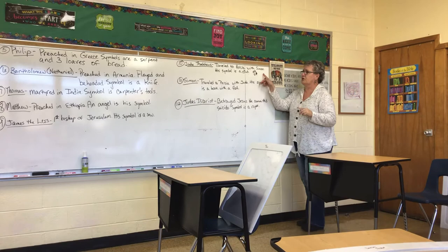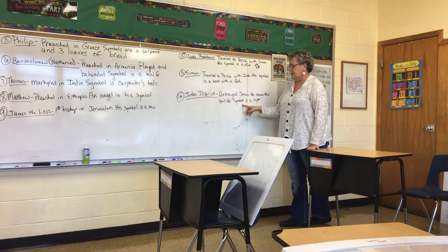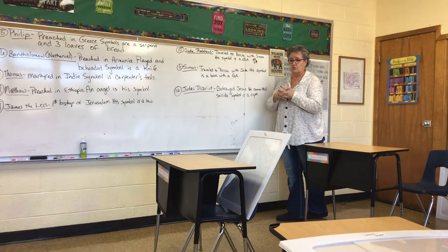Jude Thaddeus went to Persia with Simon, and his symbol was a club — that's how he was killed. Simon traveled to Persia with Jude, and his symbol is a book with a fish. And finally, Judas Iscariot betrayed Jesus. He committed suicide, and his symbol is a rope.